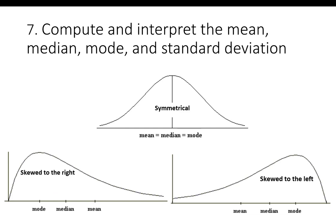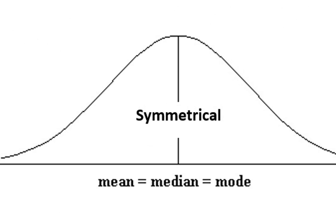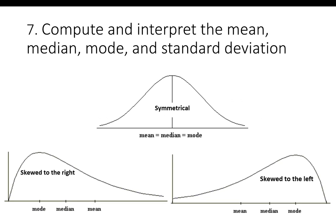One last point on mean, median, and mode relates to the skewness of a distribution. In a symmetrical (normal) distribution, the mean, median, and mode are all equal. When a distribution is skewed, the mean is pulled toward the tail. For a right-skewed distribution, the mean is the largest of the three measures. For a left-skewed distribution, the mean is the lowest. In both cases, the median falls in the middle and the mode is at the highest point.